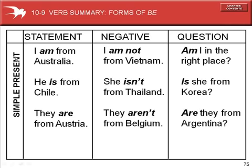The simple present tense. Statements: I am from Australia. He is from Chile. They are from Austria. To form the negative: I am not from Vietnam. She isn't from Thailand. They aren't from Belgium.